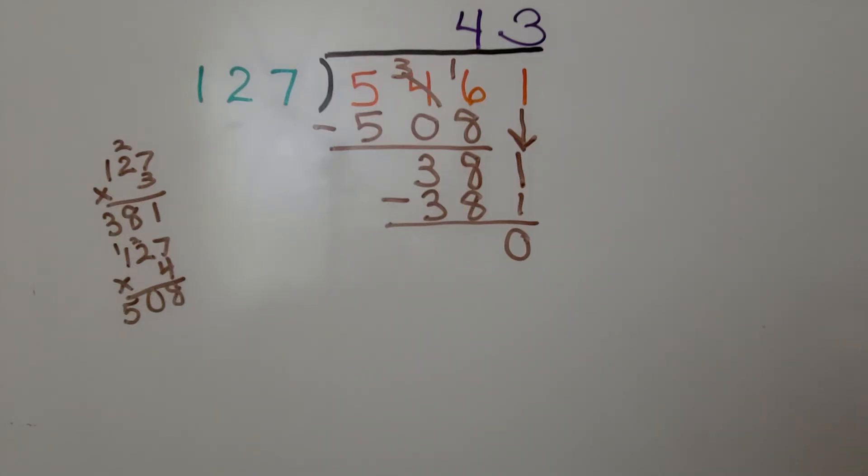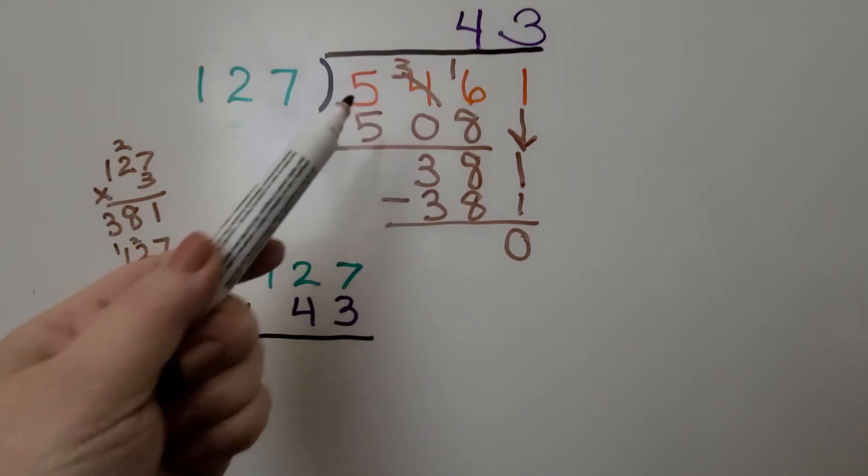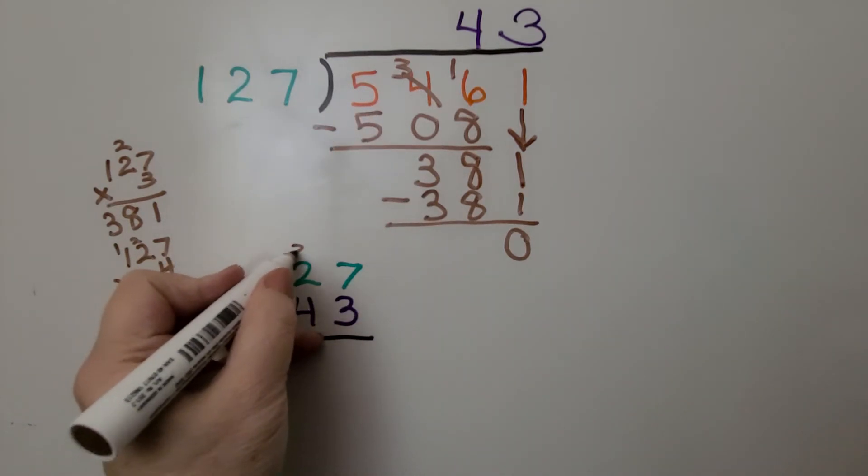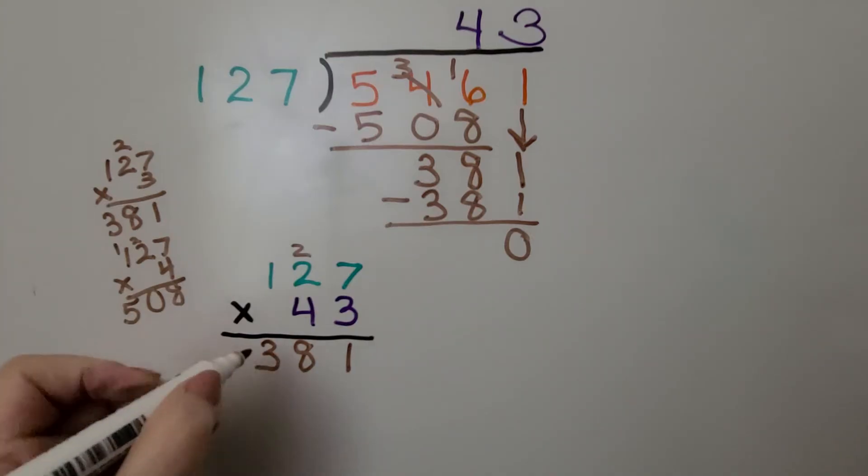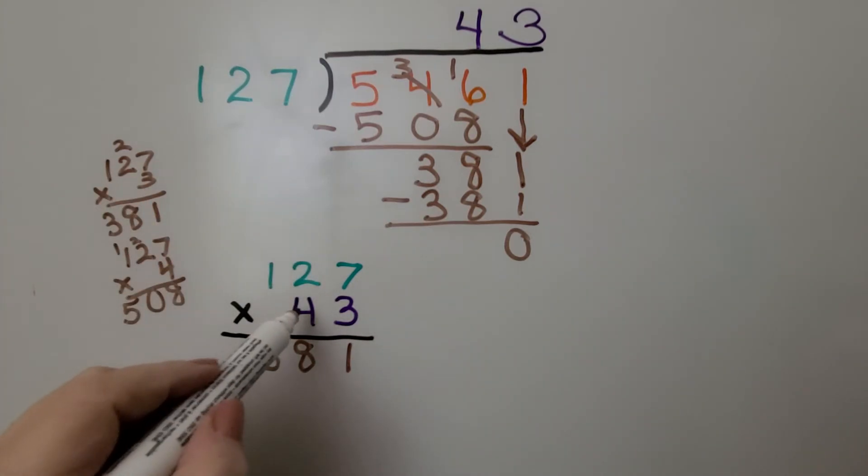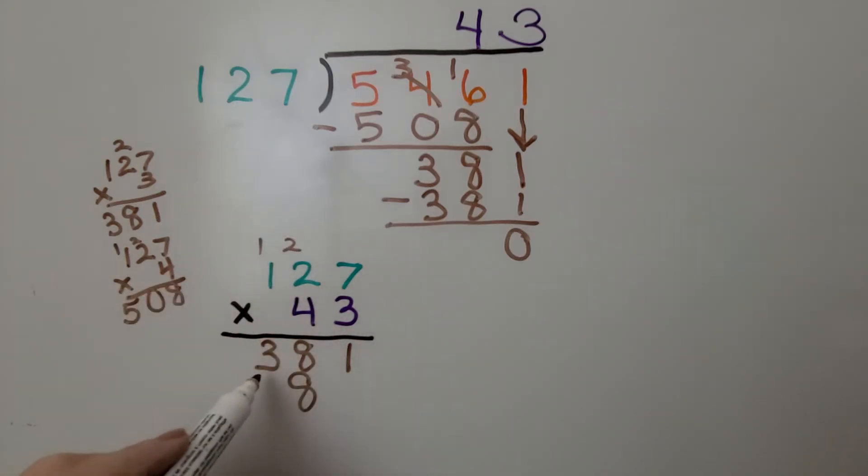And we can use multiplication to check it. We multiply the divisor times the quotient, 127 times 43. And if it equals the dividend, we know we did it correctly. We do 3 times 7 is 21, 3 times 2 is 6 plus 2 is 8, 3 times 1 is 3. Now we do the tens place. 4 times 7 is 28, 4 times 2 is 8 plus 2 is 10, 4 times 1 is 4 plus 1 is 5. We add these and we get 5,461. That was our dividend. We know we did our division correctly.